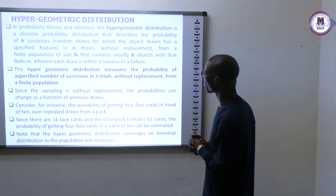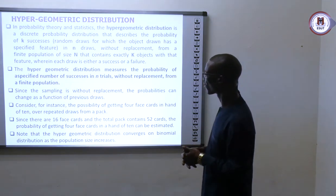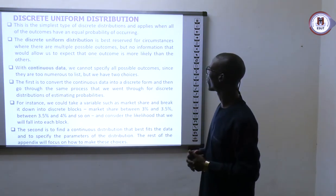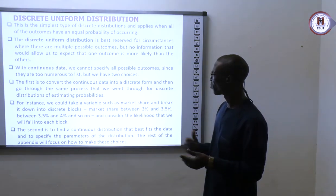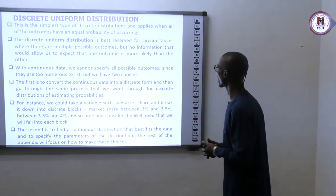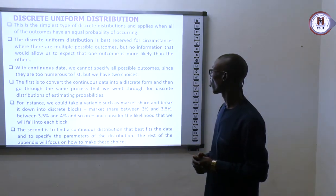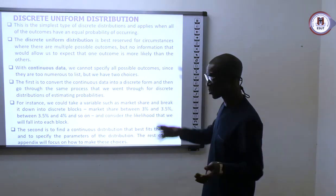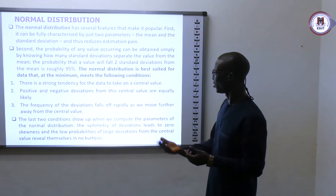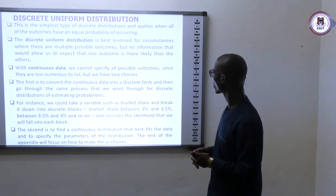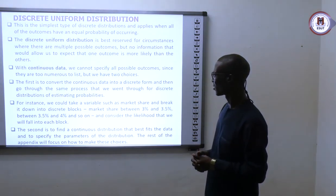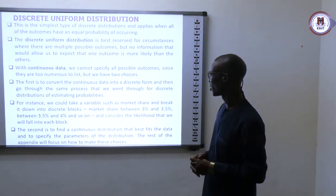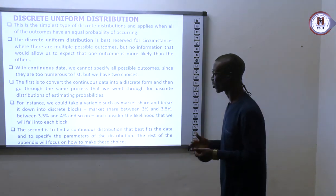We also have hypergeometric distribution, which measures the probability of a specific number of successes in a given number of trials without replacement from a finite population. Then there is discrete uniform distribution. As the name implies, it involves a discrete number, and applies when all outcomes have an equal chance — equal probability of occurring. A random distribution is one where every trial has an equal chance of occurring. Sometimes it is also applied to continuous data where all possible outcomes have equal chances of occurrence.